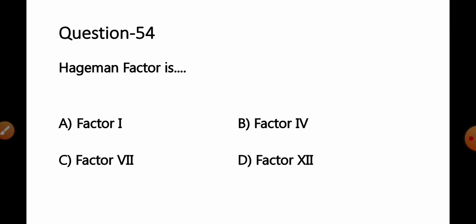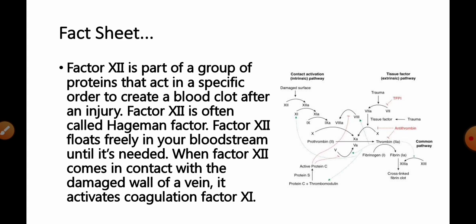Question number 54: Hageman factor is — option A: Factor 1, B: Factor 4, C: Factor 7, D: Factor 12. The correct answer is Factor 12. Factor 12 is part of a group of proteins that acts in a specific order to create a blood clot after an injury. Factor 12 is often known as the Hageman factor.